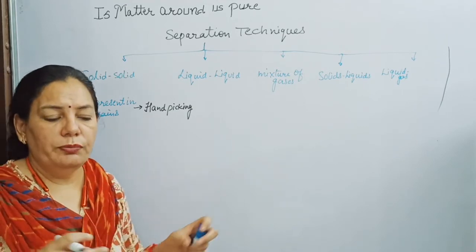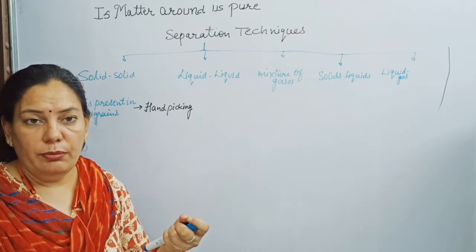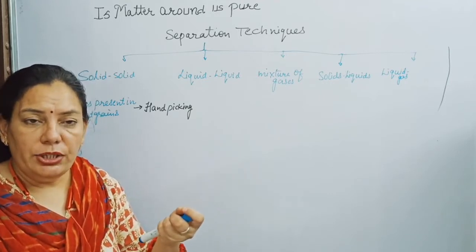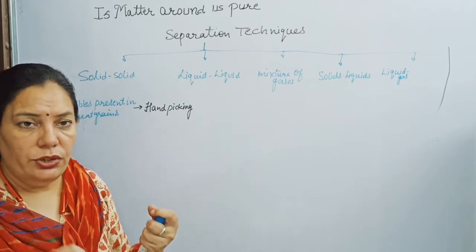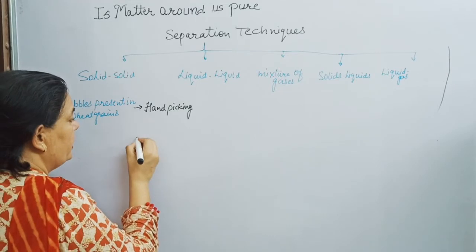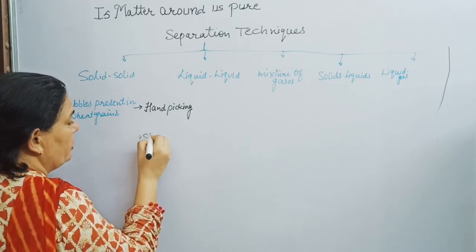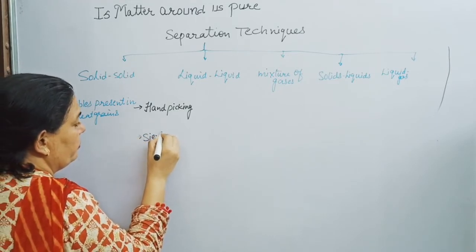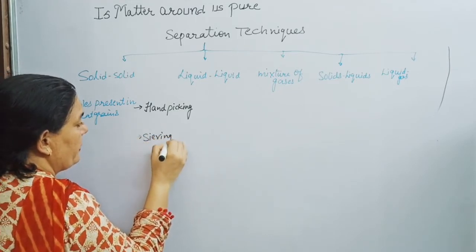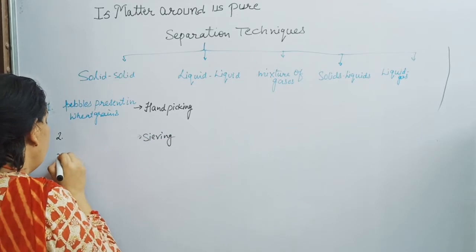When the impurities are too small or too numerous to remove by hand picking, we do sieving — that is, we take a sieve and sift the mixture through it. So the second separation method for solid-solid mixtures is sieving.